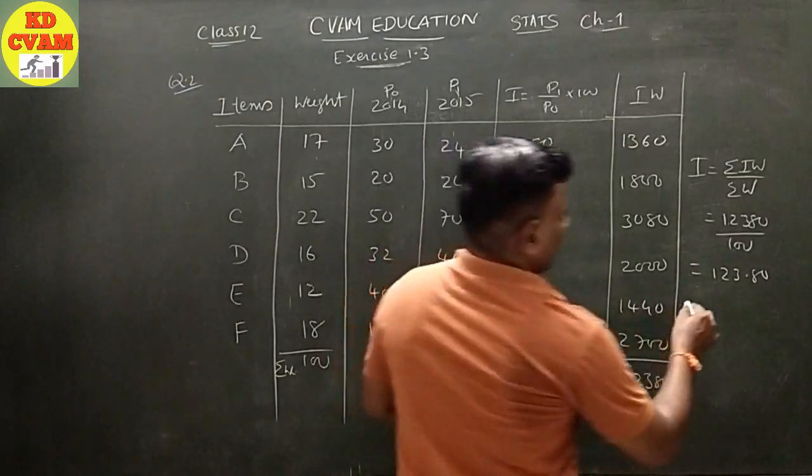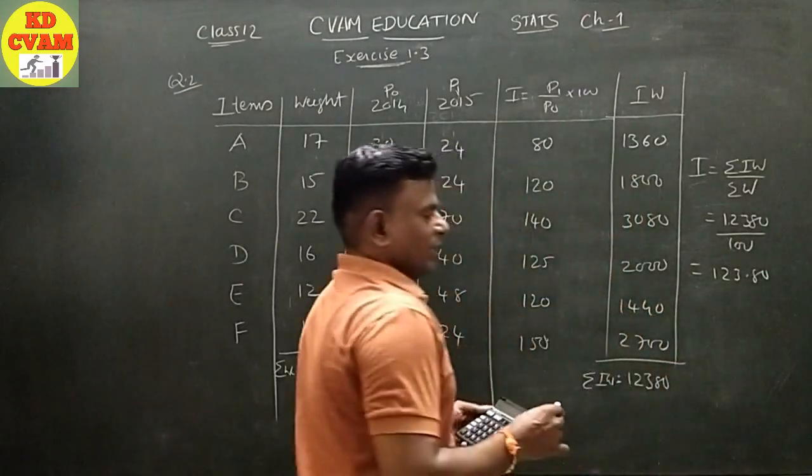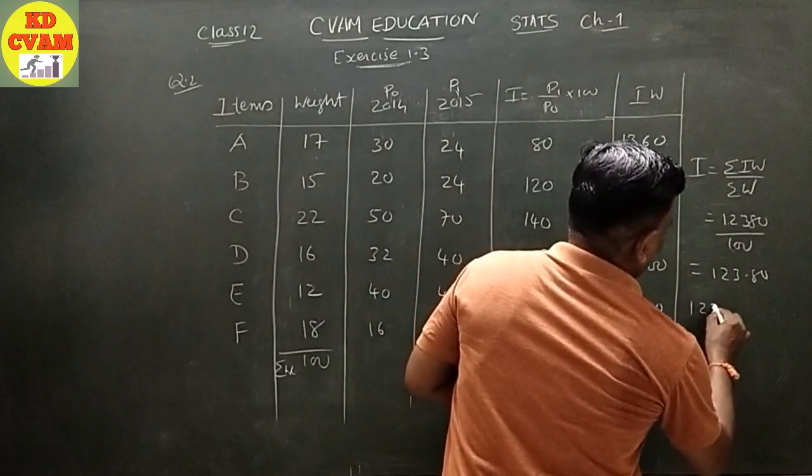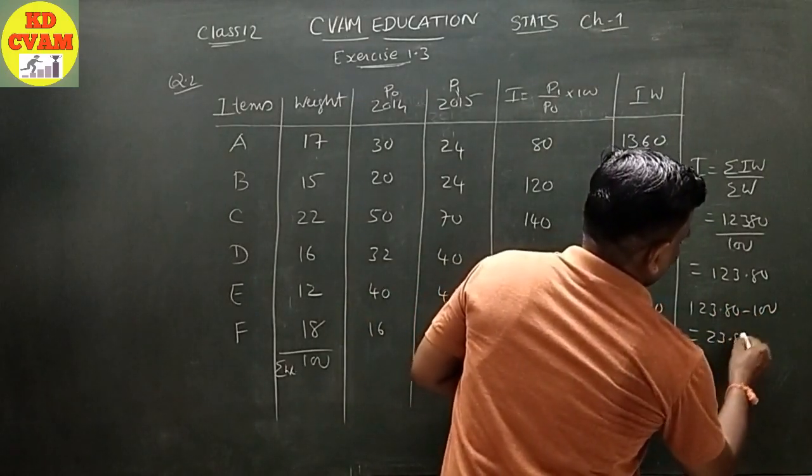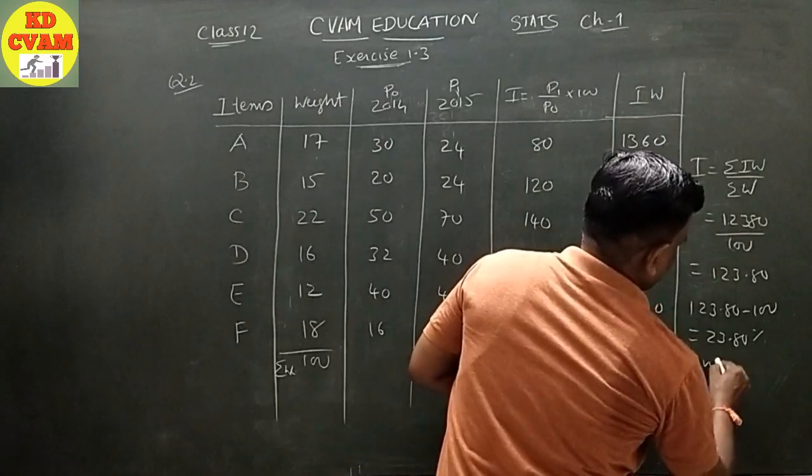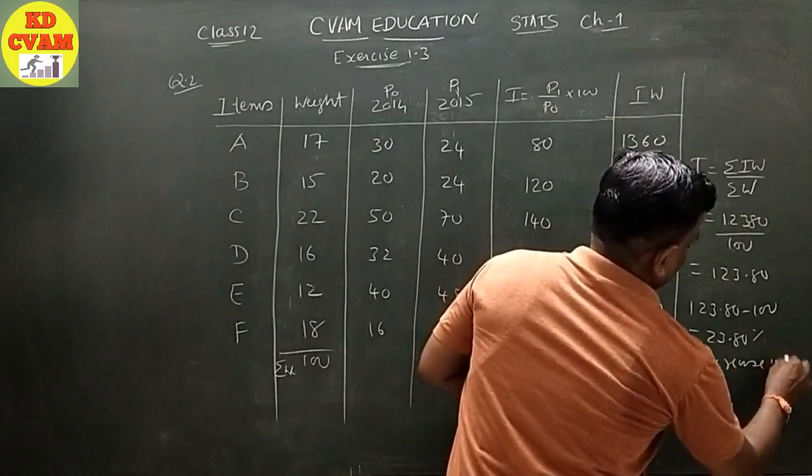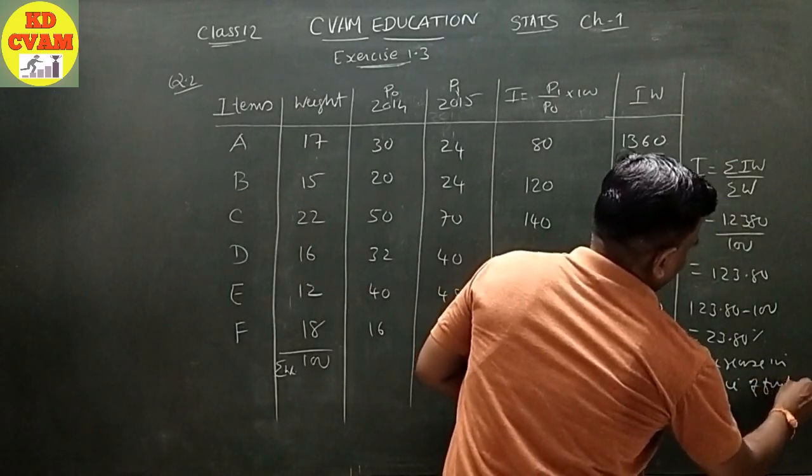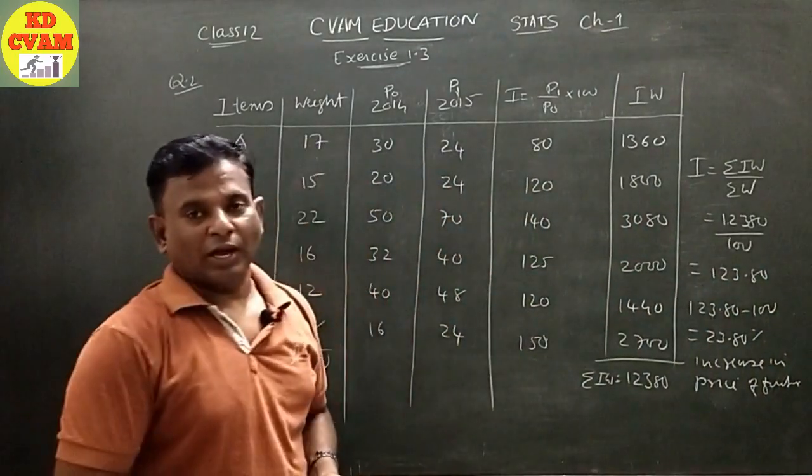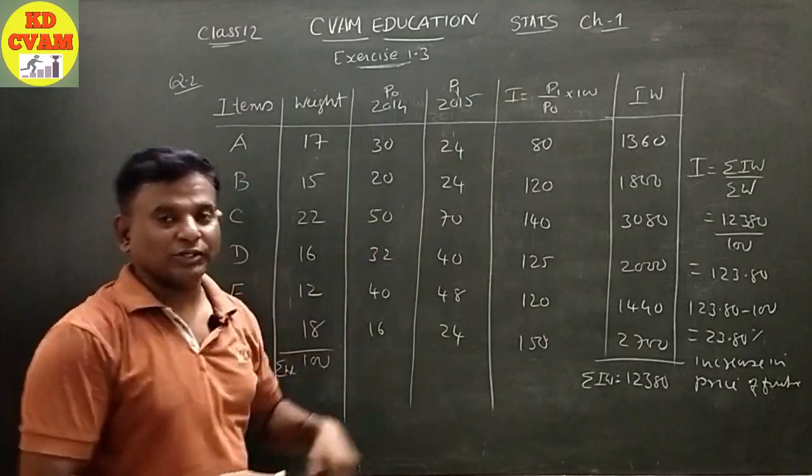Interpretation: Compared to 2014, 123.80 minus 100 equals 23.80 percentage increase in price of furniture. I hope you understood. Let's go to the next sum.